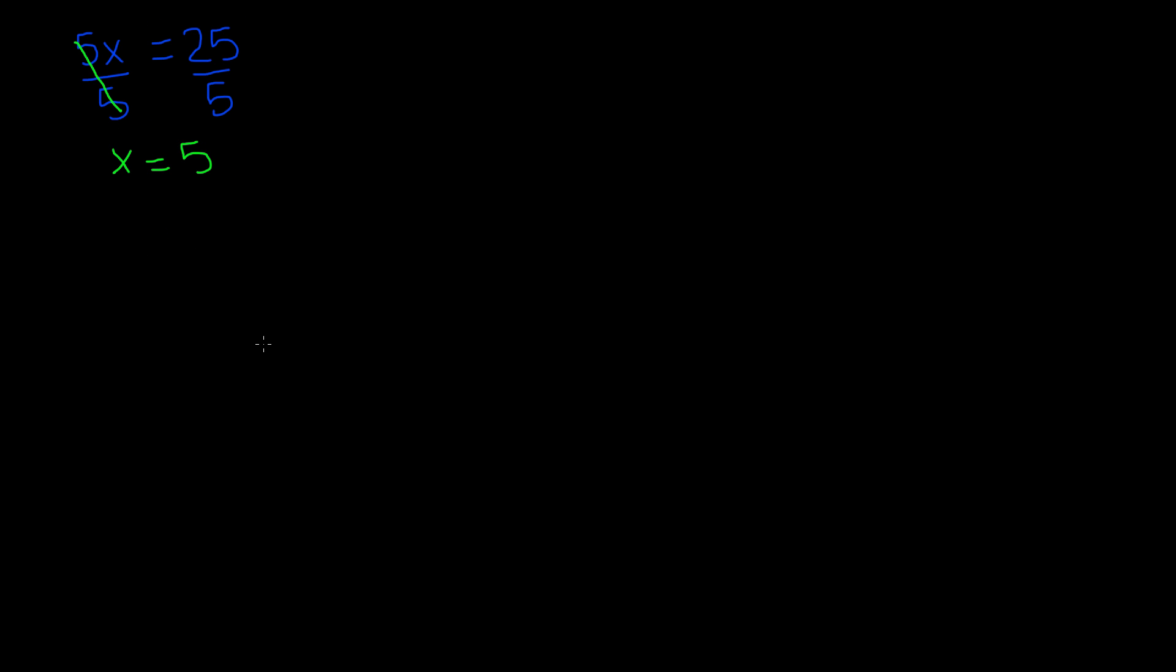The last problem is going to deal with division. So let's say that we have x divided by 6 is equal to 24. So since x is being divided by 6, we're going to have to multiply it.